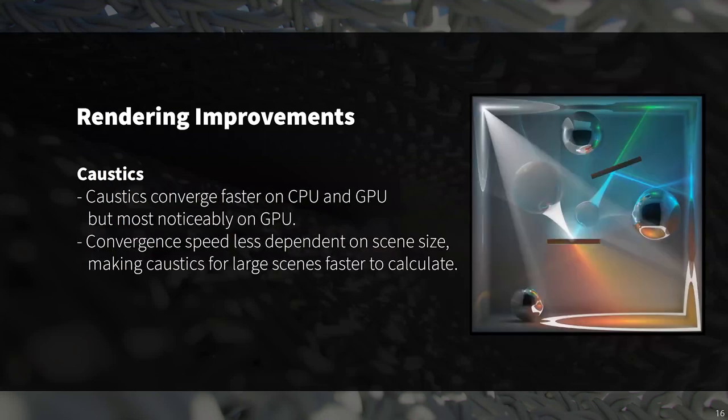This is an awesome improvement if you work with clear or translucent materials often. KeyShot 10's updates to caustic performance increase the speed at which caustics converge on both CPU and GPU — most noticeably on GPU — and also make convergence speed less dependent on the overall size of your scene, so larger scenes will typically sort themselves out a lot faster.